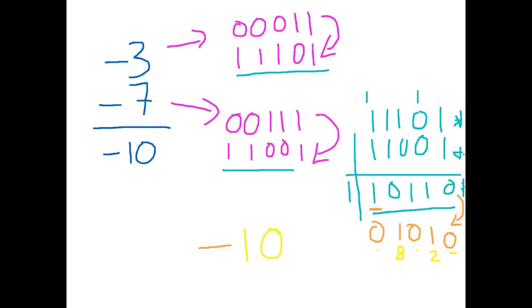One of the most important things I can say here is that when you are working with your numbers, make sure you use more bits than required to represent the number. To represent a 7 I only need 3 bits, but if I do that the leftmost bit would be a 1 and I'd be forced to interpret it as a negative. I need extra bits to allow the 2's complement process to actually take place. If I need 3 bits, it's safe to go with 5 bits.